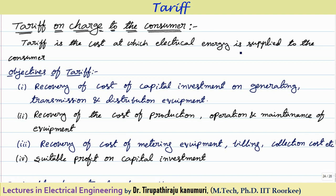In the previous classes we have seen the different types of costs involved. There are two costs: one is fixed cost and the second is variable cost, or we can divide it further into fixed cost, semi-fixed cost, and variable cost. We have to recover all those costs by charging from the consumers.